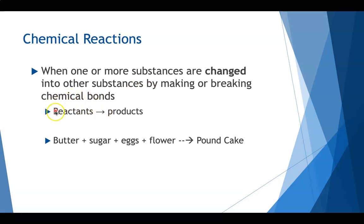When we're talking about a chemical reaction, on the left side of the reaction, before we start, we call those items reactants. So let's say we're baking a cake. That will be things like butter, sugar, eggs, and flour.